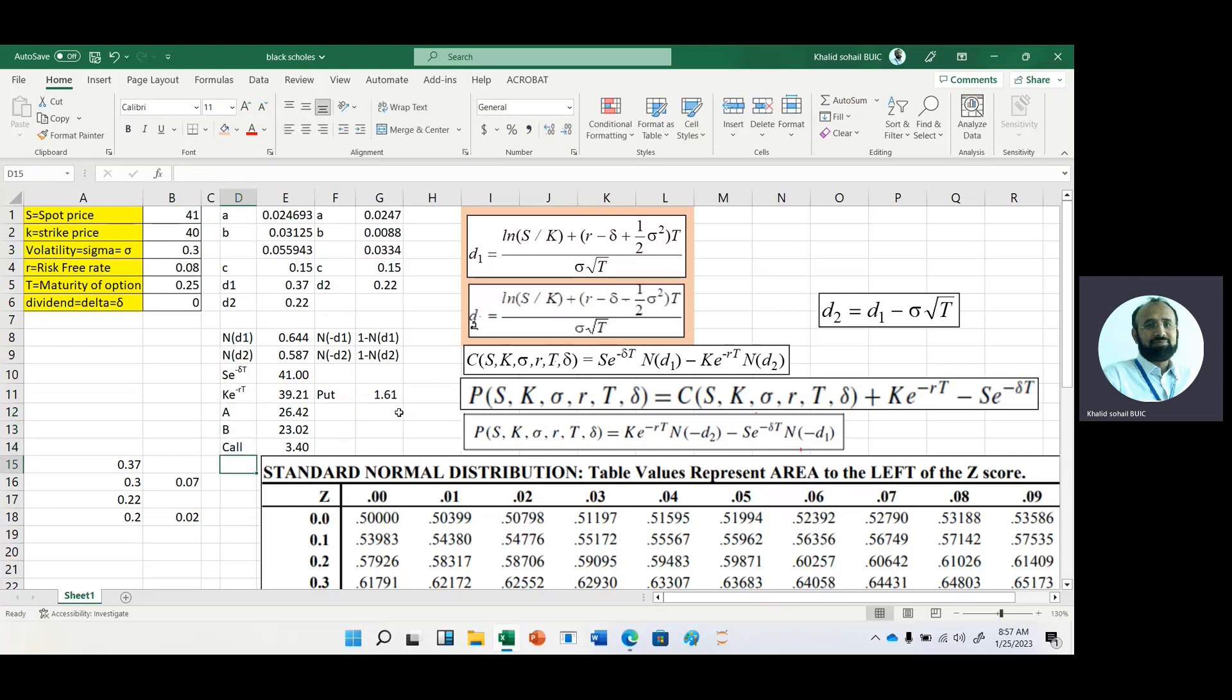You can also get the put option by using this formula. Here we need N(minus d2) and N(minus d1). N(minus d1) is basically 1 minus N(d1), and 1 minus N(d2). Just put all these values in the put option formula: K times e raised to the power multiplied by N(minus d2), minus S multiplied by N(minus d1). You can see we have the same answer.